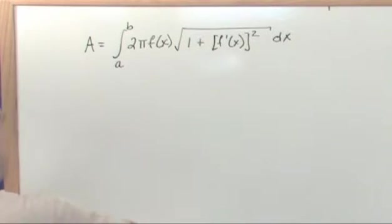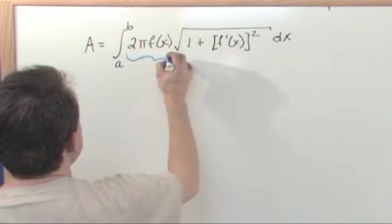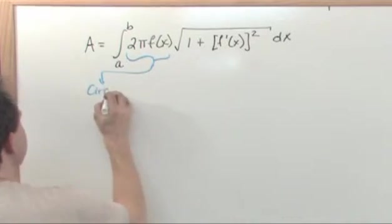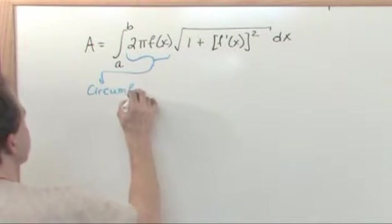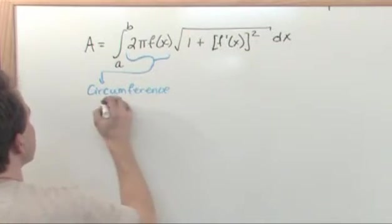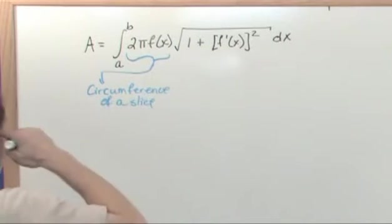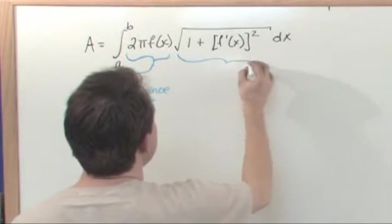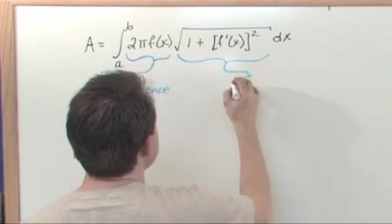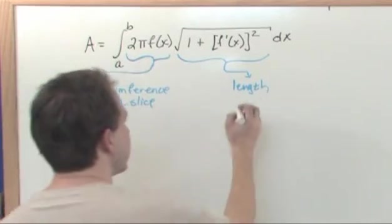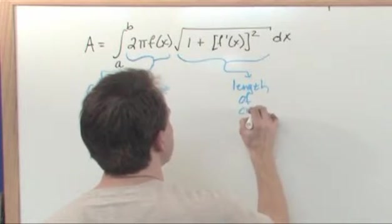And recall, just to spell it out for you, that this part of it right here, this was the circumference of a slice of that cross section. I'll draw it for you here in a second. And this part was the length of the curve.